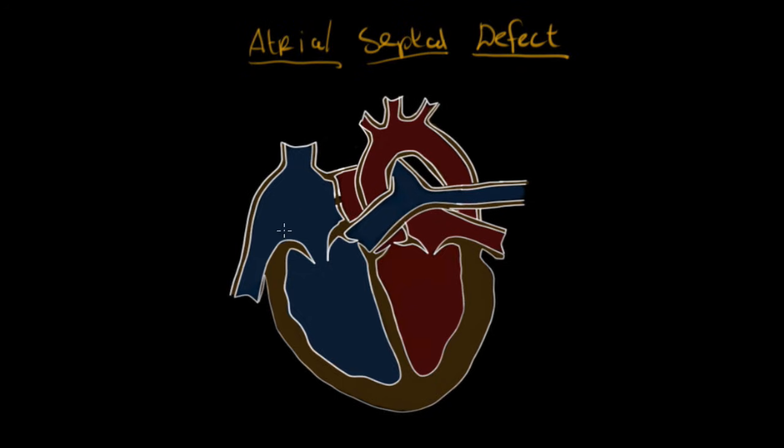So over here, we have our right atrium. Over here, we have our left atrium. And of course, we have our right ventricle and left ventricle. We're not going to focus on those in this video, but I just want to mention that really quick. So if we have a hole in the wall between the left and the right atria, what's going to happen?